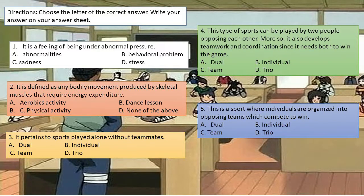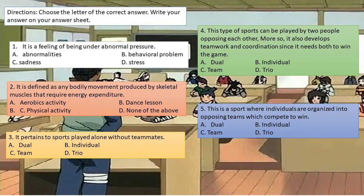Number 3: It pertains to sports played alone without teammates. A. Dual, B. Individual, C. Team, D. Trio. Number 4: This type of sports can be played by two people opposing each other; it also develops teamwork and coordination since it needs both to win the game. A. Dual, B. Individual, C. Team, D. Trio. Number 5: This is a sport where individuals are organized into opposing teams which compete to win. A. Dual, B. Individual, C. Team, D. Trio.